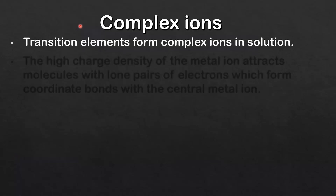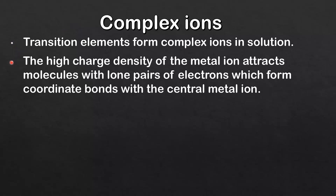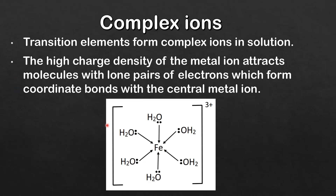Let's start with the structure of complex ions. Transition elements form complex ions in solution. The high charge density of the metal ion attracts molecules with lone pairs of electrons, which form coordinate bonds with a central metal ion. Here's an example of a complex ion — this is called the hexa aqua ion 3+ ion.